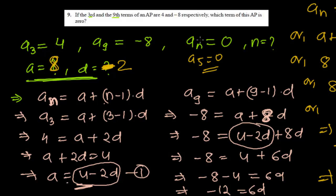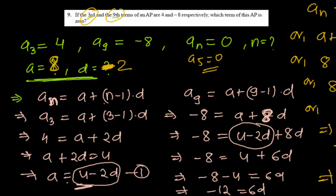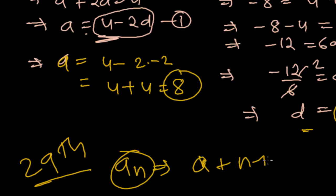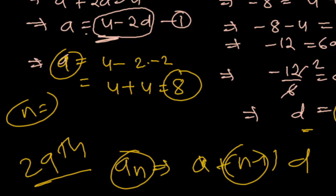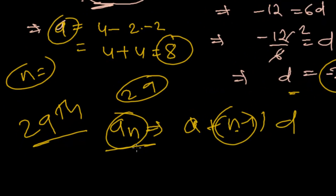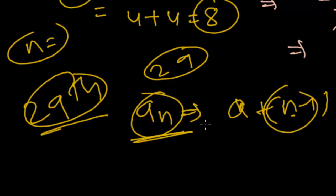So like this, we find which term equals 0. In similar problems, you might be given any two terms and asked to find the value of the 29th, 45th, or 100th term. The approach is the same: first find A and D, then once N is given, plug everything into the Nth term formula A plus N minus 1 times D to get the answer.